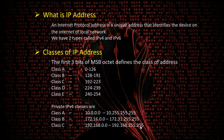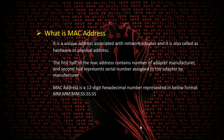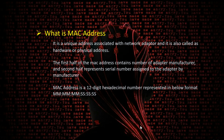A MAC address is a unique address associated with a network adapter, also called a physical address or hardware address. It consists of two parts: the first half identifies the manufacturer of the adapter — such as IBM or HP or any other vendor — and the second half represents the serial number of the adapter. This is how we identify the vendor and serial number from a MAC address.